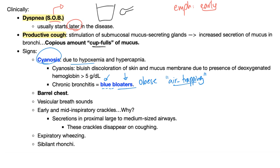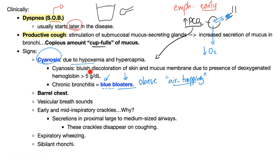This cyanosis is caused by hypoxemia and hypercapnia. In chronic bronchitis, you cannot get the air out, so you can't get air in easily, stacking air on top of air. This leads to less oxygen in the blood — hypoxemia — and CO2 trapped in the alveoli, increasing PCO2, leading to respiratory acidosis. Cyanosis is defined as bluish discoloration of skin and mucous membranes due to deoxygenated hemoglobin greater than 5 grams per deciliter.